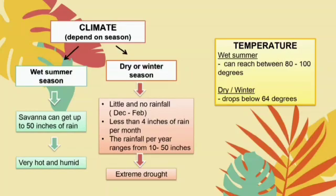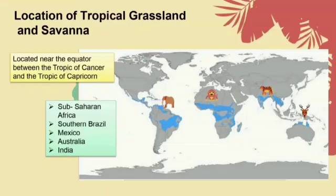The temperature of the savannas for the wet summer can reach between 80 to 100 degrees, while for the dry or winter season it drops below 64 degrees. The location of tropical grasslands and savannas is near the equator between the Tropic of Cancer and the Tropic of Capricorn, which includes sub-Saharan Africa, southern Brazil, Mexico, Australia and India.